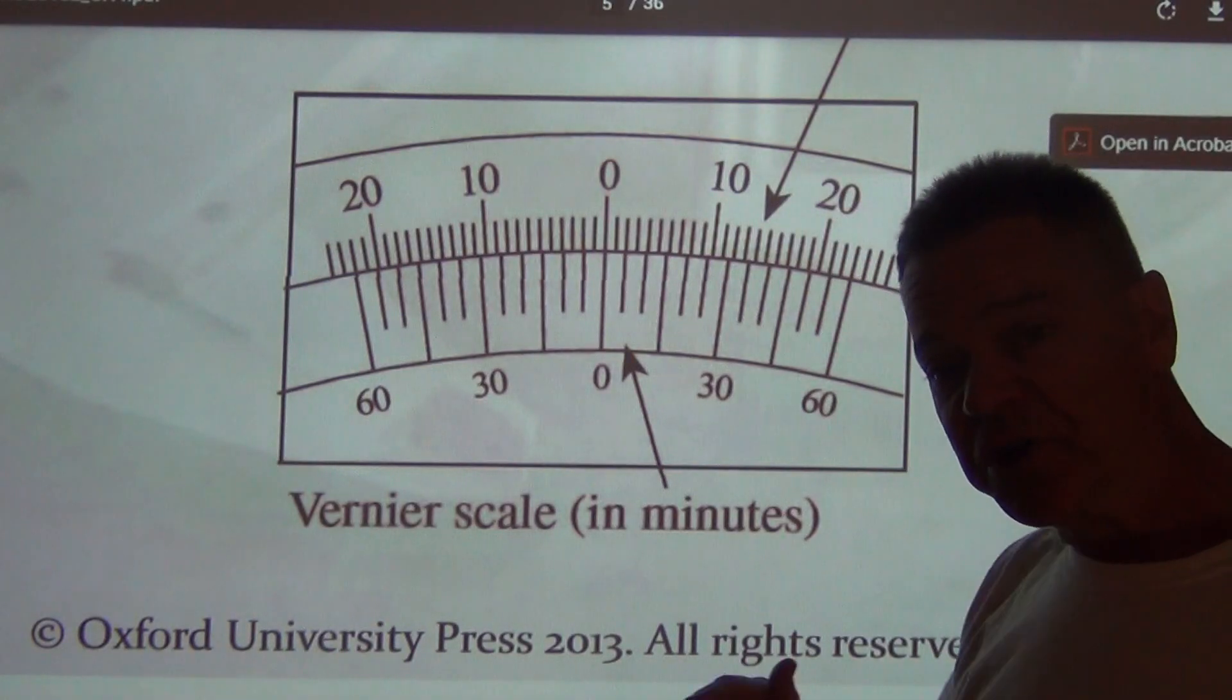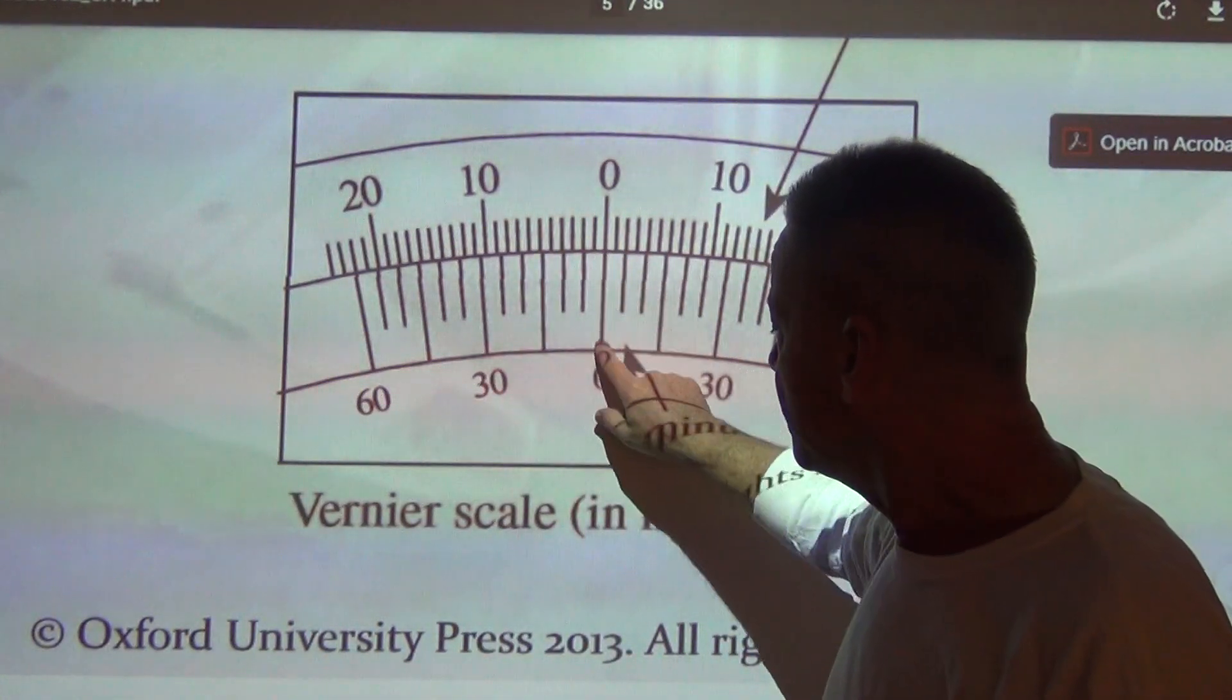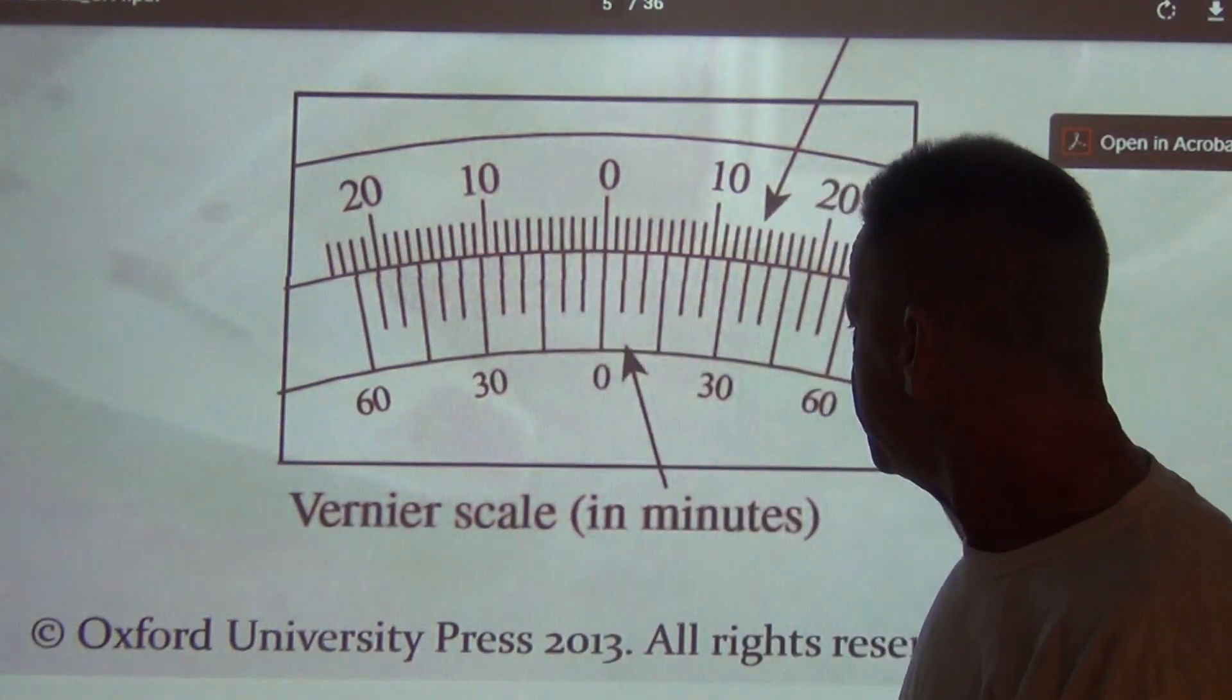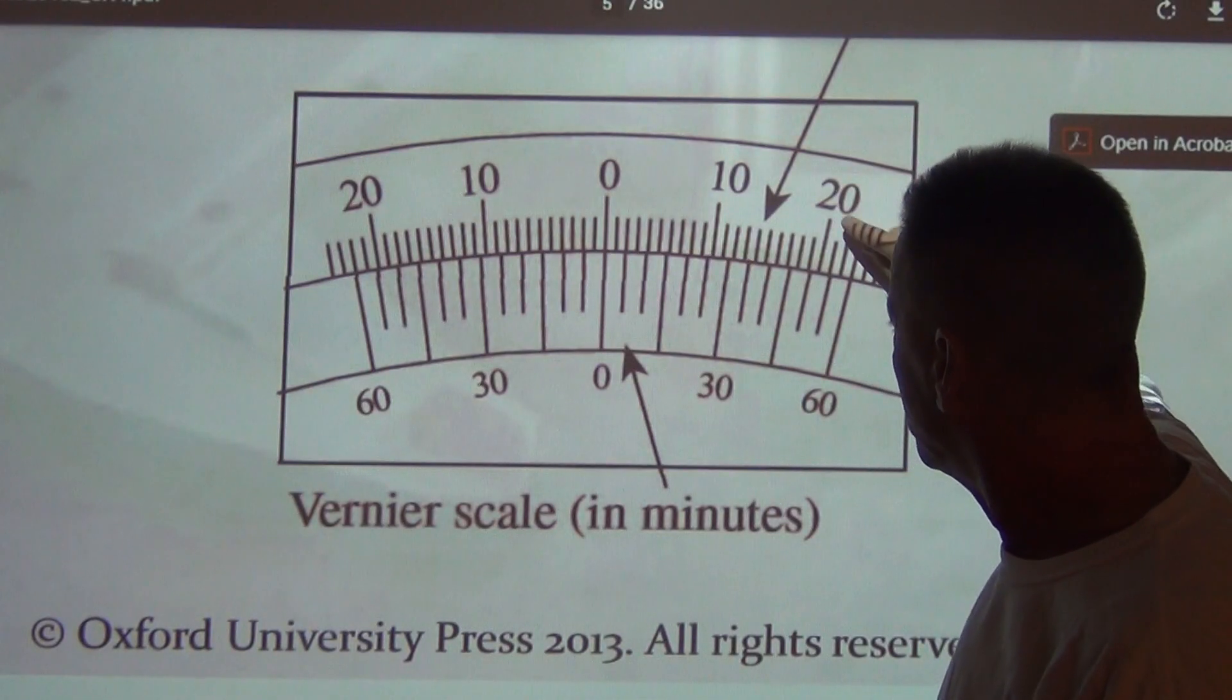Now, here's my suggestion. If you look carefully at how this is aligned, this zero here, this zero lines up with the zero, this 60 is over here at the 23-degree mark on the main scale.